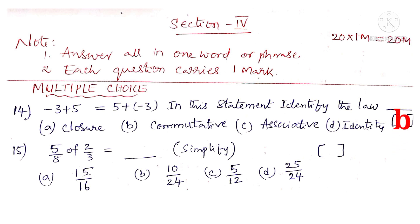Now 15th. 5 by 8 of 2 by 3. Observe the word of. It indicates multiplication. So 5 by 8 into 2 by 3. So on simplification by 2, 2 ones are, 2 fours are. In the numerator 5 into 1 is 5. In the denominator 4 into 3 is 12. So answer is 5 by 12. So the correct choice is C.